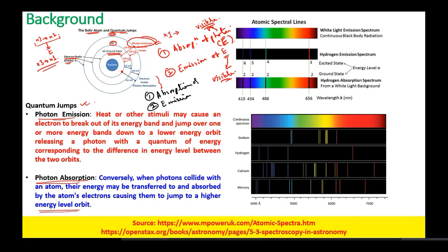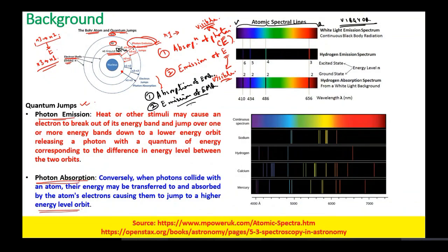Absorption of light or EMR. Similarly, emission of electromagnetic radiation. Now if you look into the spectra of white light, it starts from V and ends at R — the VIBGYOR range. When the electron comes from n3 level to n1 level, there is a certain quantum jump.